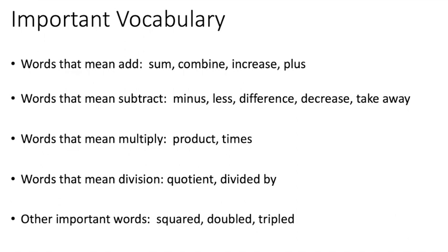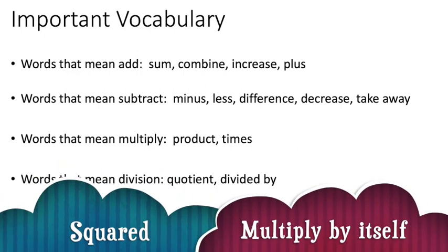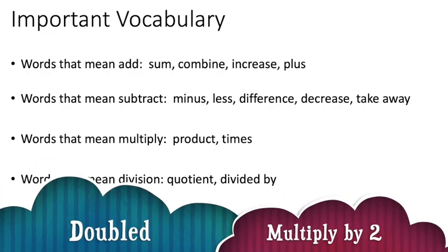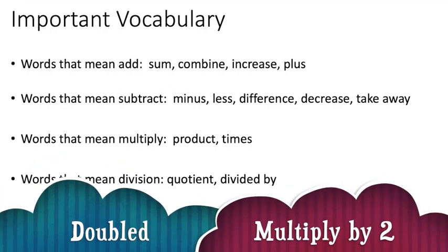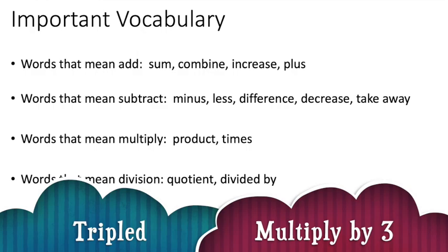When you're writing expressions, you do have to be familiar with a lot of vocabulary. You might want to pause the video during this list and familiarize yourself with some of these words. Most of these words are pretty self-explanatory, but I do want to focus on the bottom three. Squared means to multiply something by itself, doubled means to multiply something by two, and tripled means to multiply something by three.